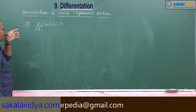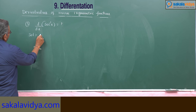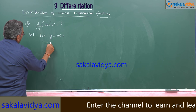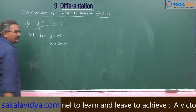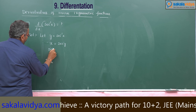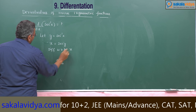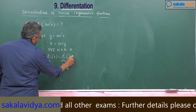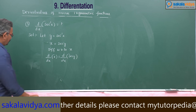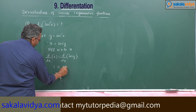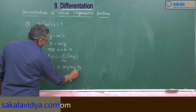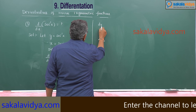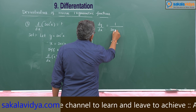Let us find out the derivative of secant inverse x. Let y equal to secant inverse x, so x is equal to secant y. Differentiate with respect to x: d/dx of x is equal to d/dx of secant y. Derivative of x is 1; derivative of secant y is secant y times tan y times dy/dx. So dy/dx is equal to 1 by secant y tan y.